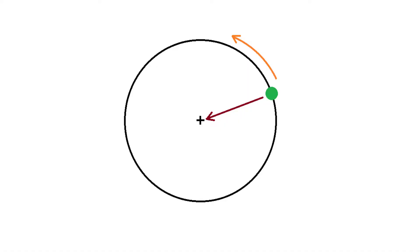According to Newton's first law, an object can only change direction if some force is applied to it, which means that when an object is moving in a circular trajectory, there must be a constant force applied to it at all times. That force is called the centripetal force, and it points right to the centre of the circle that the object is following.